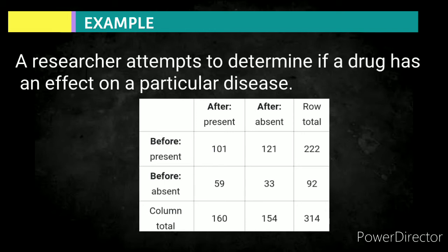While in the before-absent row, we have 59 for C and 33 for D. So, 101 plus 121 equals 222, 59 plus 33 equals 92, 101 plus 59 equals 160, 121 plus 33 equals 154. So, our N or the grand total is 314.